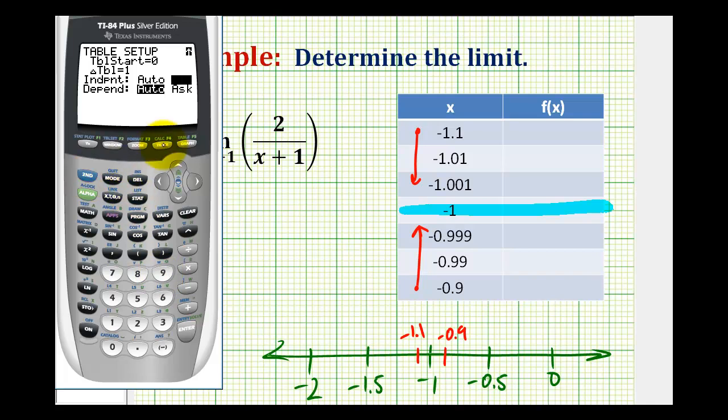And now if we go to the table by pressing second graph, we can just type in these values from our table. We'll go ahead and just go straight down this first column, negative 1.1, negative 1.01.